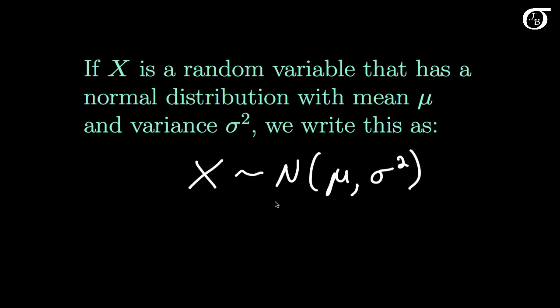x is distributed normally, a big N. First term is the mean, second term is the variance. Be a bit careful here as different sources can have a different term in here. Sometimes people have the second term representing the standard deviation. I have the second term representing the variance. So just be a bit careful with that.